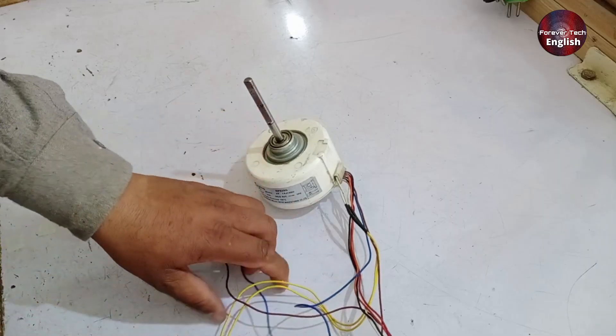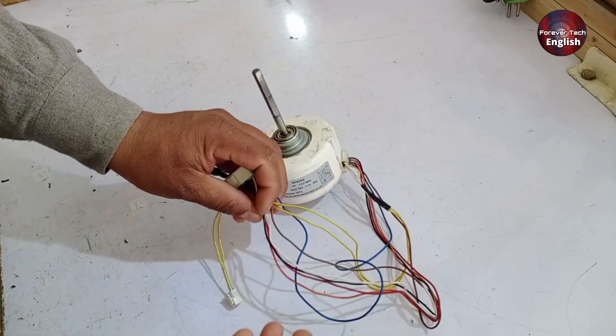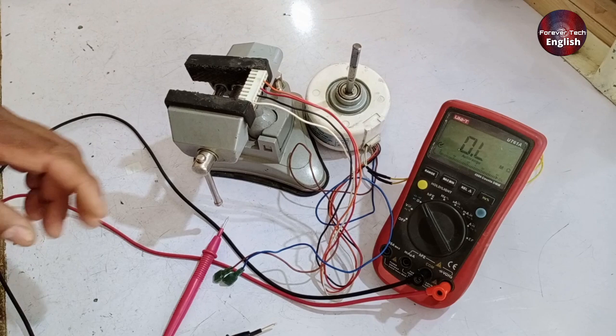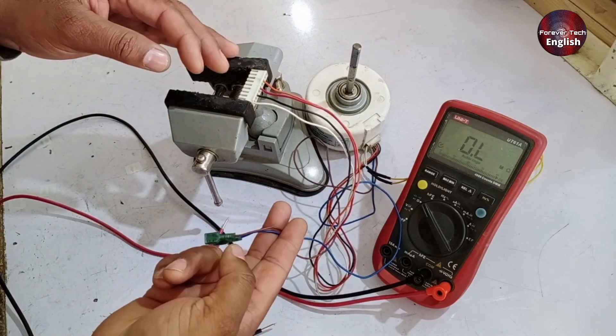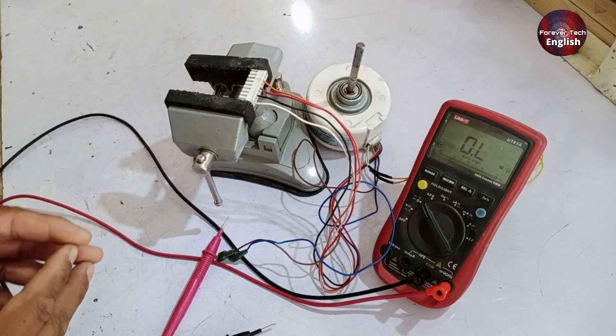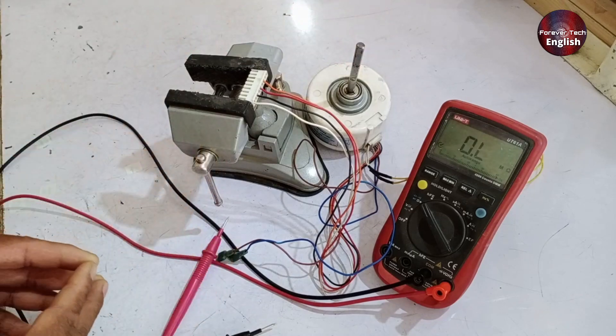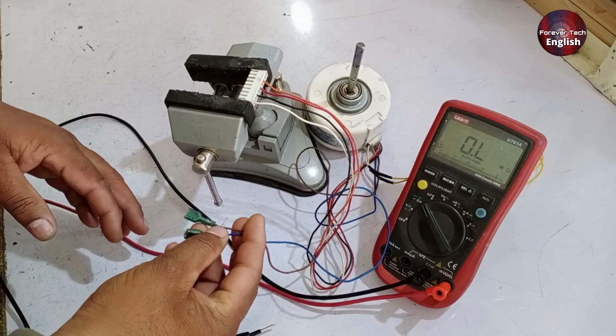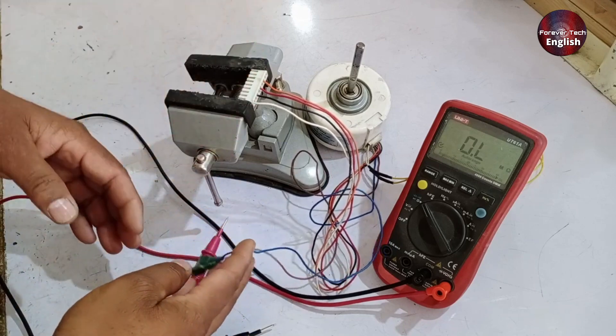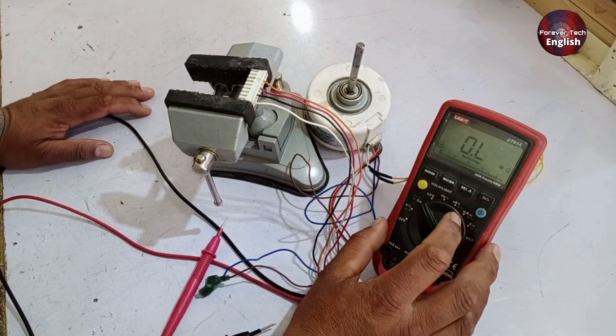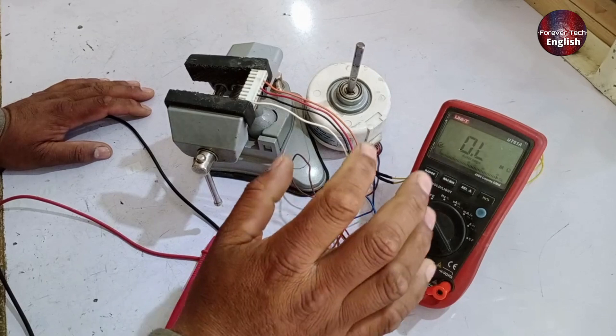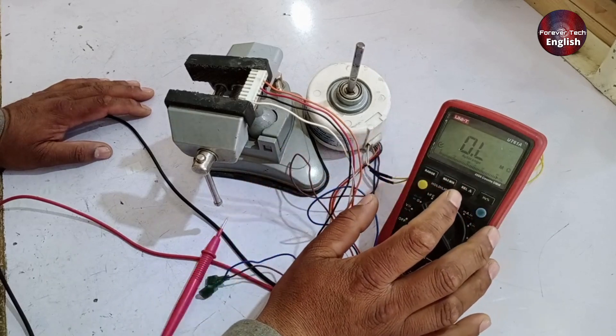To understand the windings, you'll need to test them with a multimeter or a series board. The company has brought out six wires from this motor. Even if there were only five wires, the same functions could still be achieved. However, since there are six wires, we need to figure out what the remaining wires are for. The company has made two wires common at one point, so we need to identify which ones are common. For that, you'll need a multimeter. You can set the multimeter to continuity mode or check in ohms mode, but continuity mode is easier if you are less experienced.